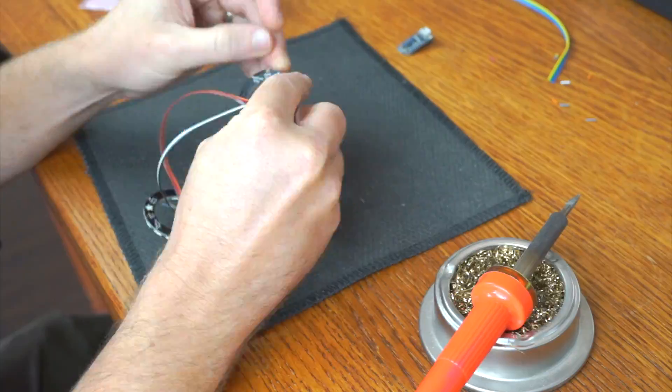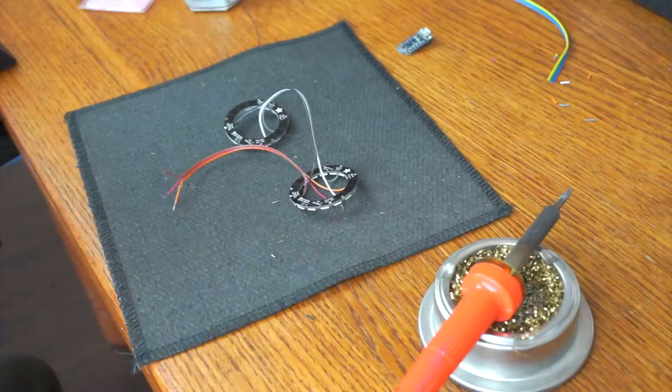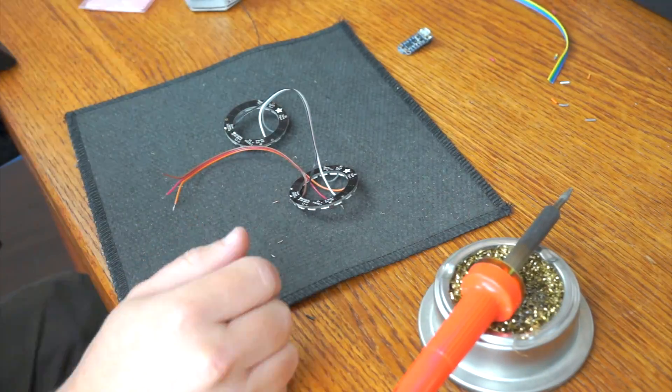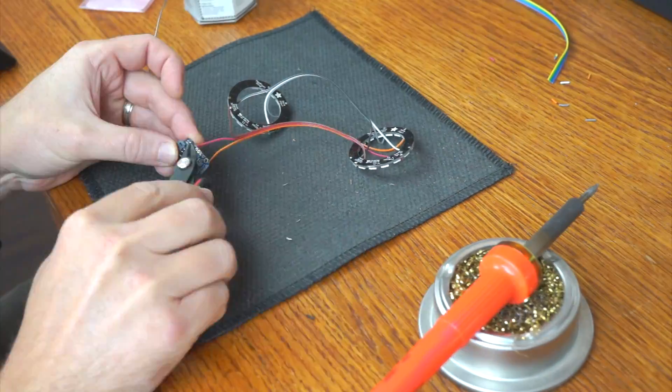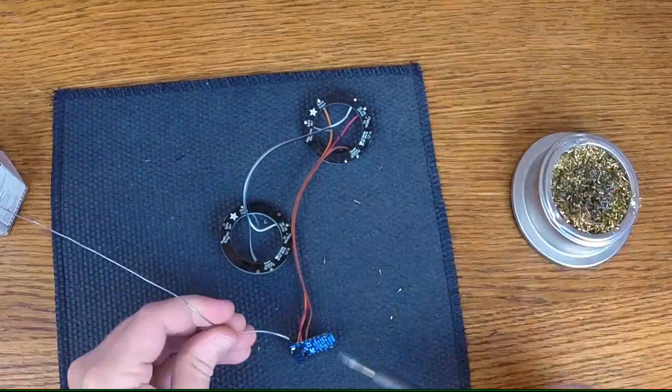There's three main connections you need to be concerned about. There's power, ground, and signal, data in, data out, and then those get wired up to the trinket board. That's what I'm doing right here.